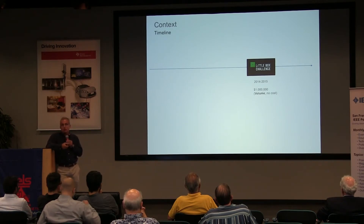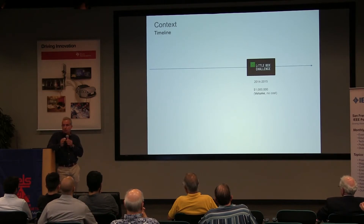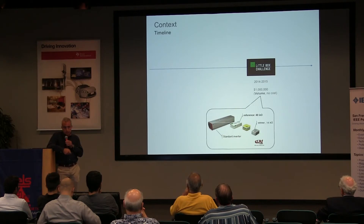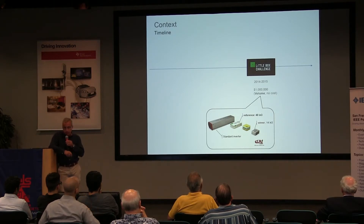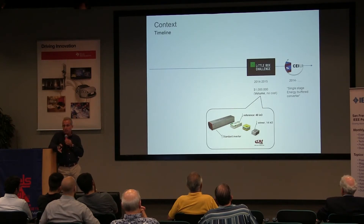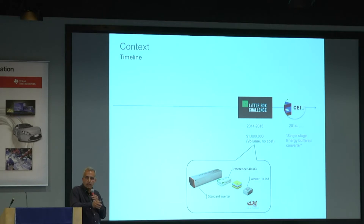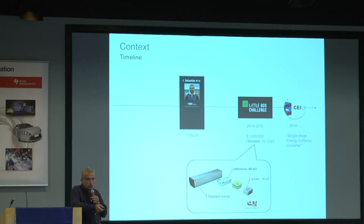Let me put this in context. We developed this metric to compare many possible architectures for inverters for PV panels in the Little Box Challenge. The goal was to achieve the smallest possible inverter, so volume was important and cost was not. There was a winner — CET — in which the reference was 40 cubic inches, and they did 14 cubic inches. We predicted 12.9 cubic inches in a different topology from all the finalists, but it didn't work at that time and we are still working on it. The methodology we follow is inspired by the two-input buck converter published in 1996.